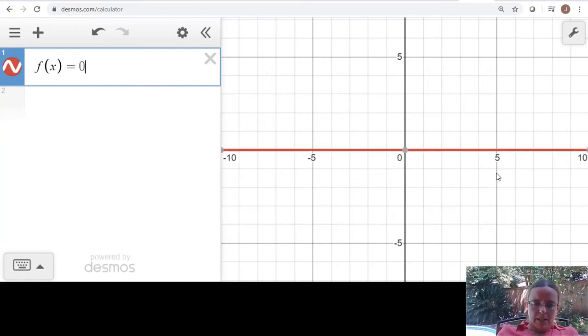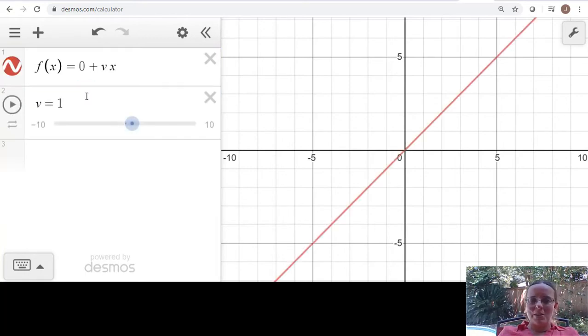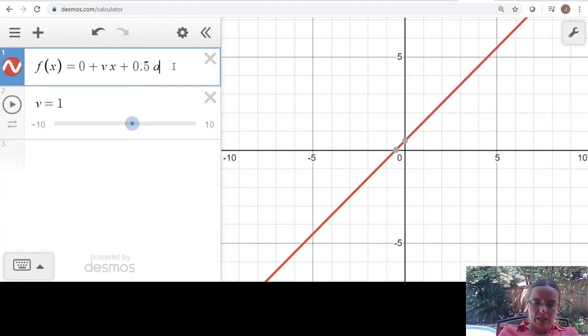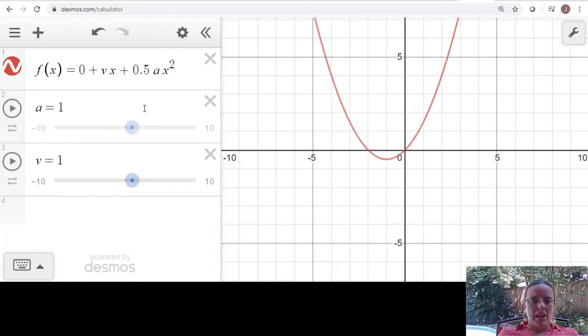So zero, and then we're going to have some kind of velocity times time. And remember, in our case, I can't use the symbol t for time because it only graphs on the x-axis what is labeled x. So imagine that all the x's are actually times here. So this would be for zero acceleration.